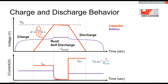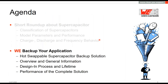Batteries have an almost constant cell voltage at constant current operation — when there's no more charge it's quite stable, and when you start discharging it stays at roughly the same level. However, you cannot charge and discharge a battery as fast as a supercapacitor.